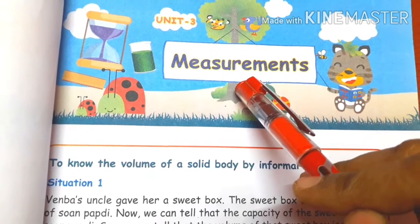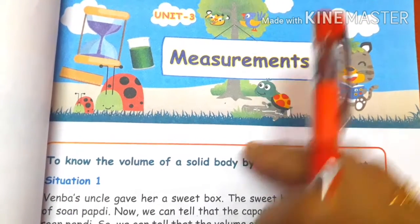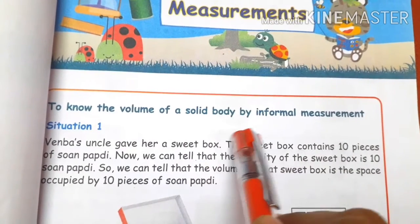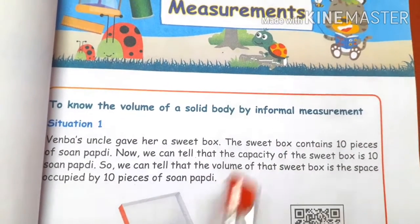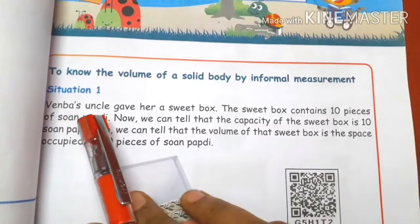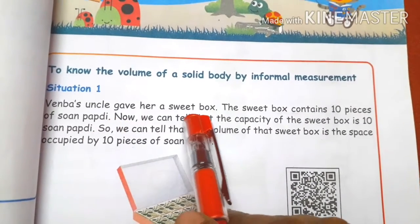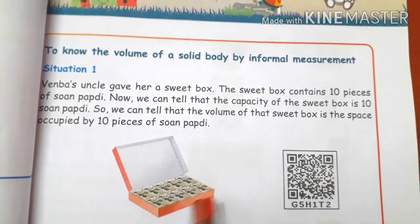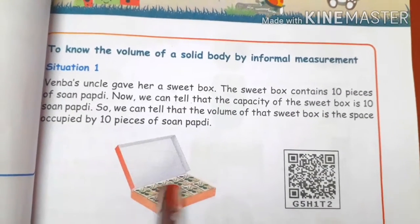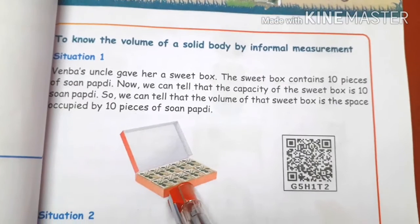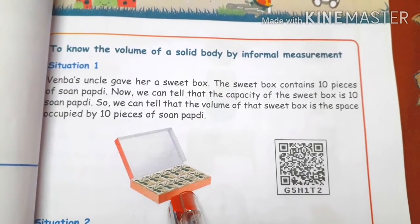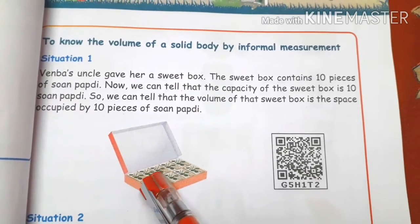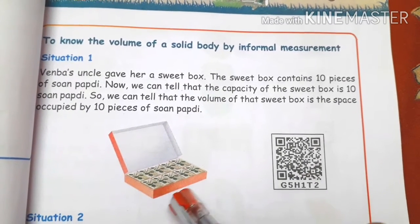Measurement is nothing but measuring measurements. To know the volume of a solid body by informal measurement, consider a situation: when a bus uncle has a sweet box, and the sweet box holds 10 pieces of stone pepper — the volume of the sweet box is 10 pieces of stone pepper.